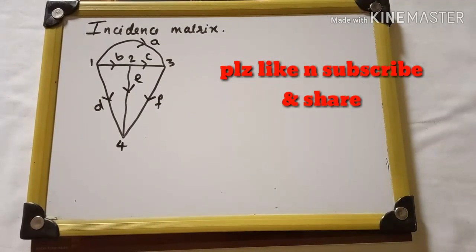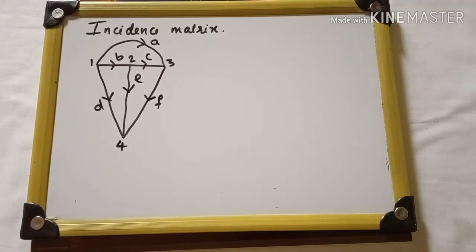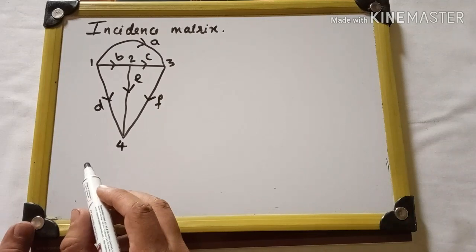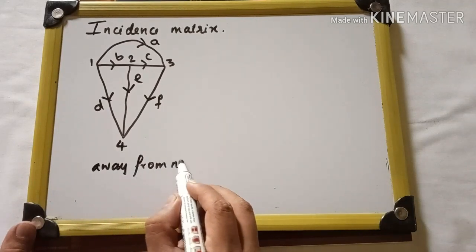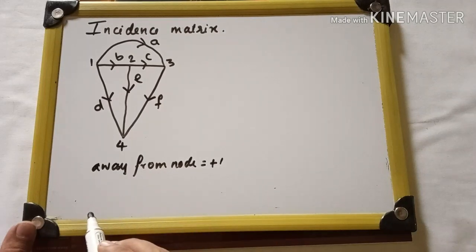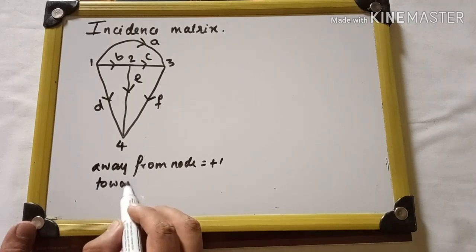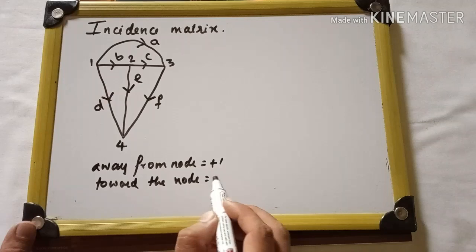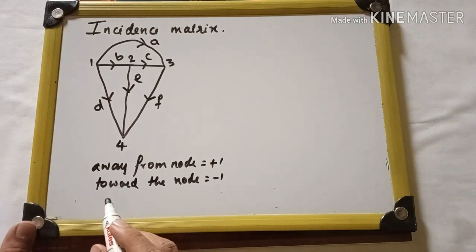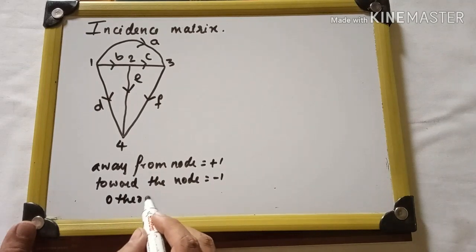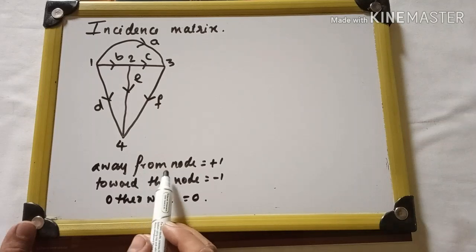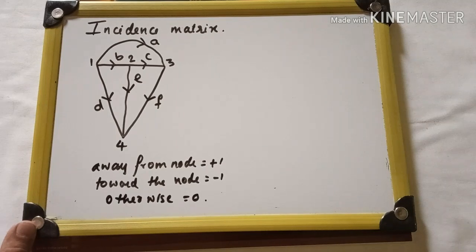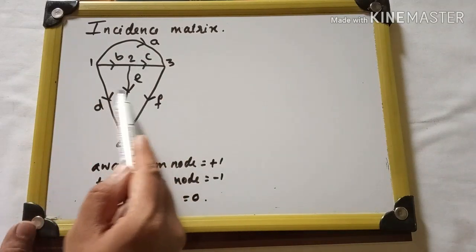How to solve incidence matrix. First, we will see in incidence matrix: if a branch goes away from a node, we will write plus 1. If the branch is coming towards the node, we will write minus 1. If it is not connected to the node, we will write 0. This graph has six branches.